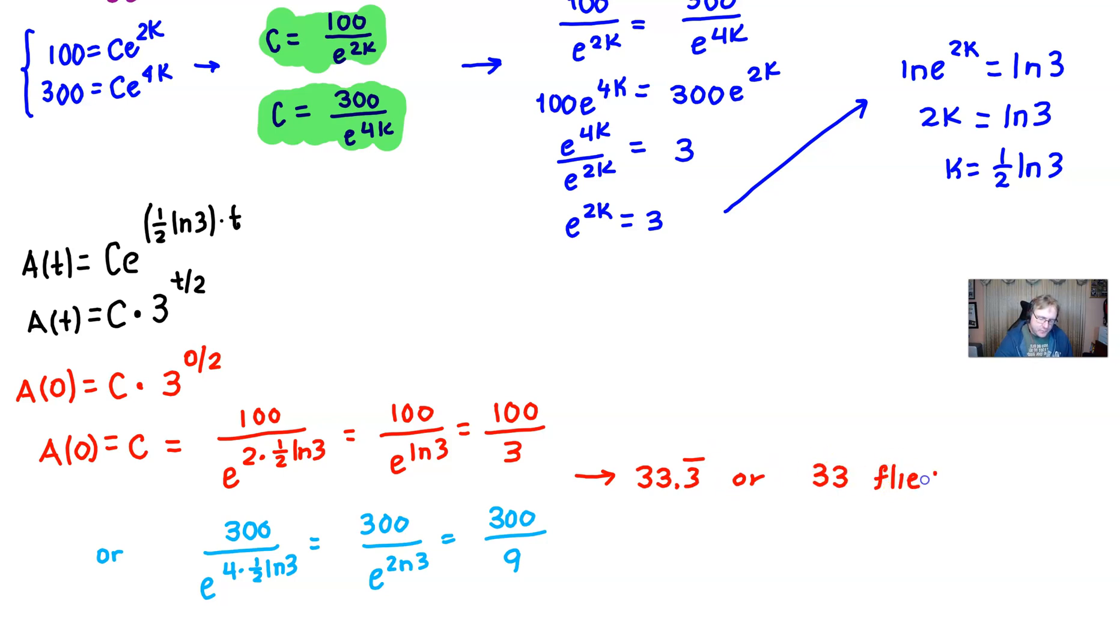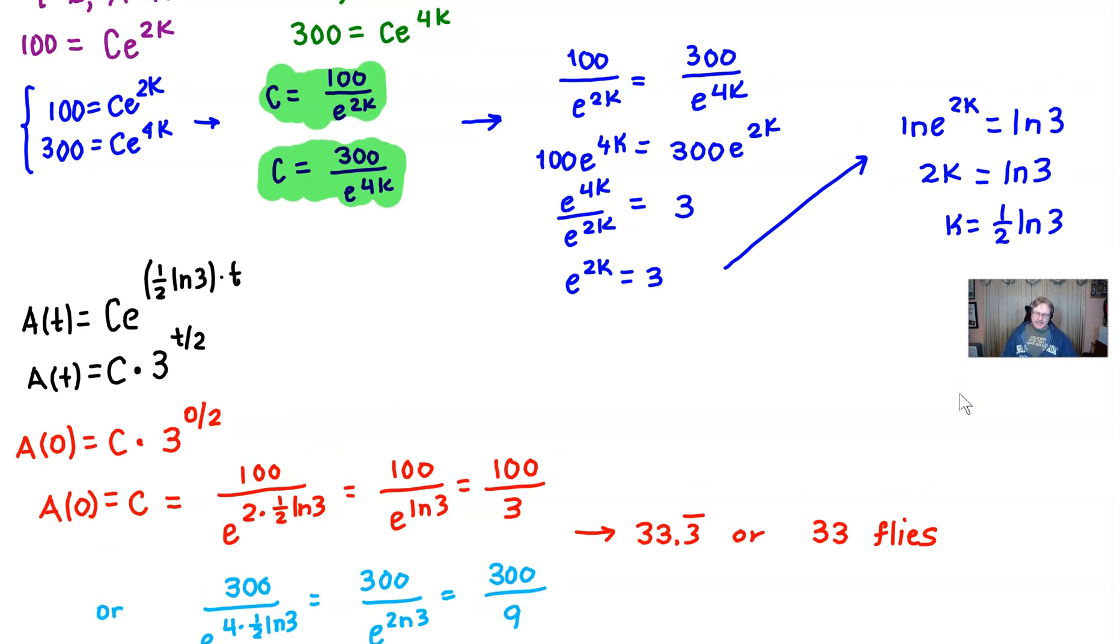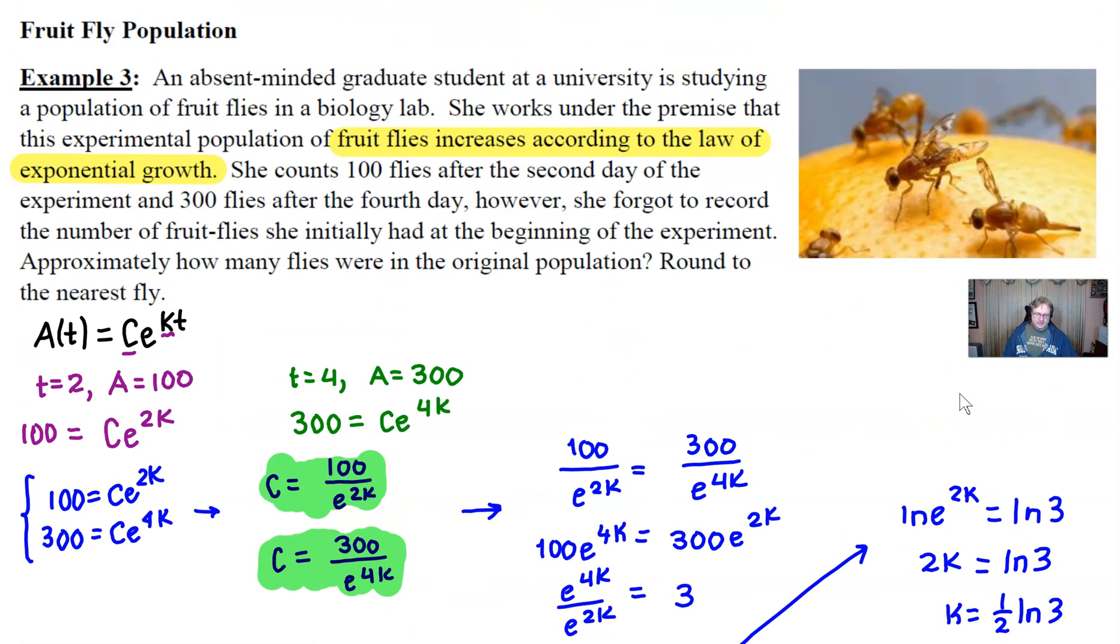And therefore our absent-minded graduate student can predict that that's what she initially had before the breeding had begun, and thus appease her professor and have a good report. So yep, just another example of how you can use the idea of Ce^(kt) to answer some real-world problems. We've got a few more still ahead of you here. I think each one gets, at least in my opinion, a little bit more interesting. And we hope that you tune in for those. If you like what you see, be sure to subscribe, and we'll see you next time.